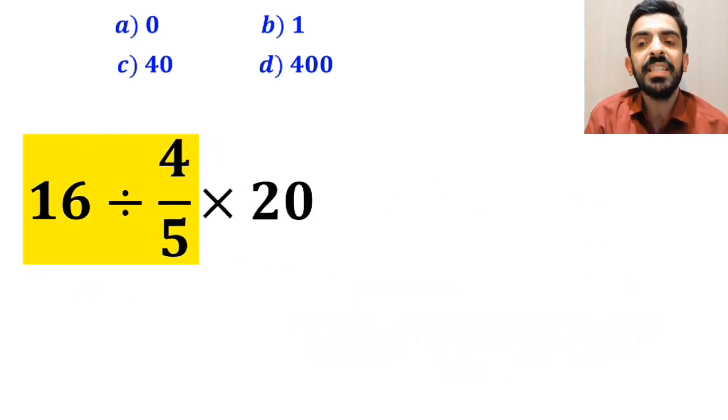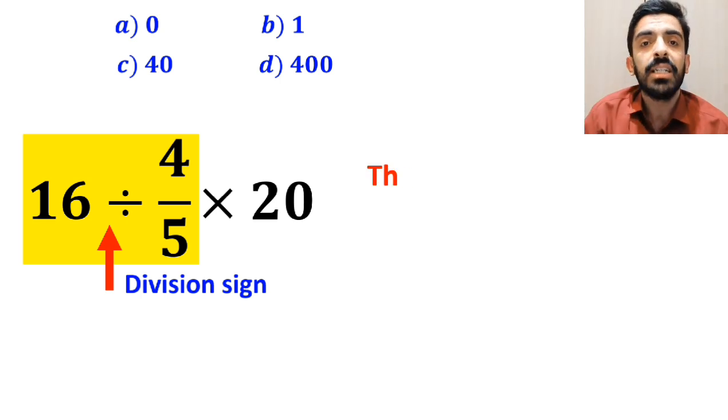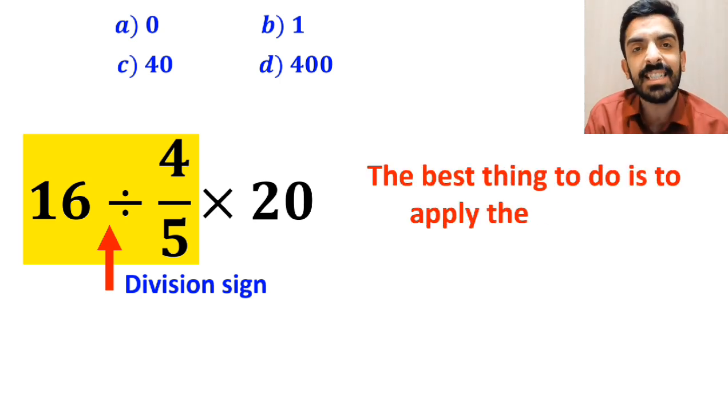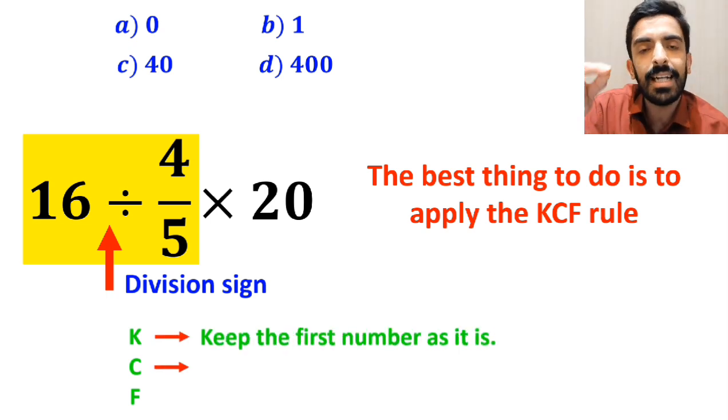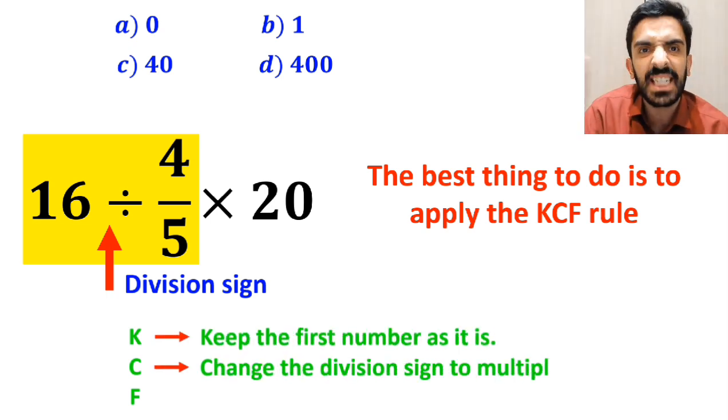So we'll start with the expression 16 divided by 4 over 5. Whenever we see a division sign between two terms, the best thing to do is to apply the KCF rule. K stands for keep the first number as it is, C stands for change the division sign to multiplication, and F stands for flip the second fraction.